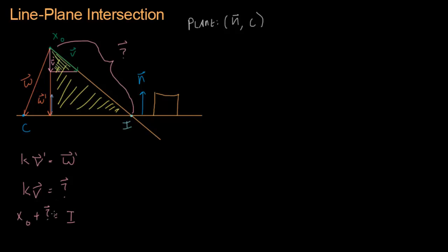And so we know what the question mark vector is, right? It's k times v. It's k times v. So let's substitute that.